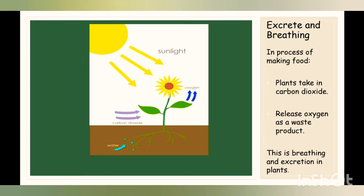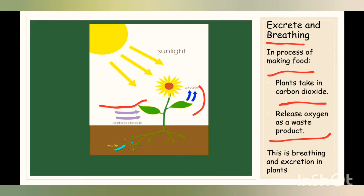The second important thing about plants is excretion and breathing. In the process of making food, plants take in carbon dioxide. Their leaves take in carbon dioxide and release oxygen as a waste product. So this is the plant's excretion and breathing. With the process of food making, plants are breathing and producing waste at the same time.